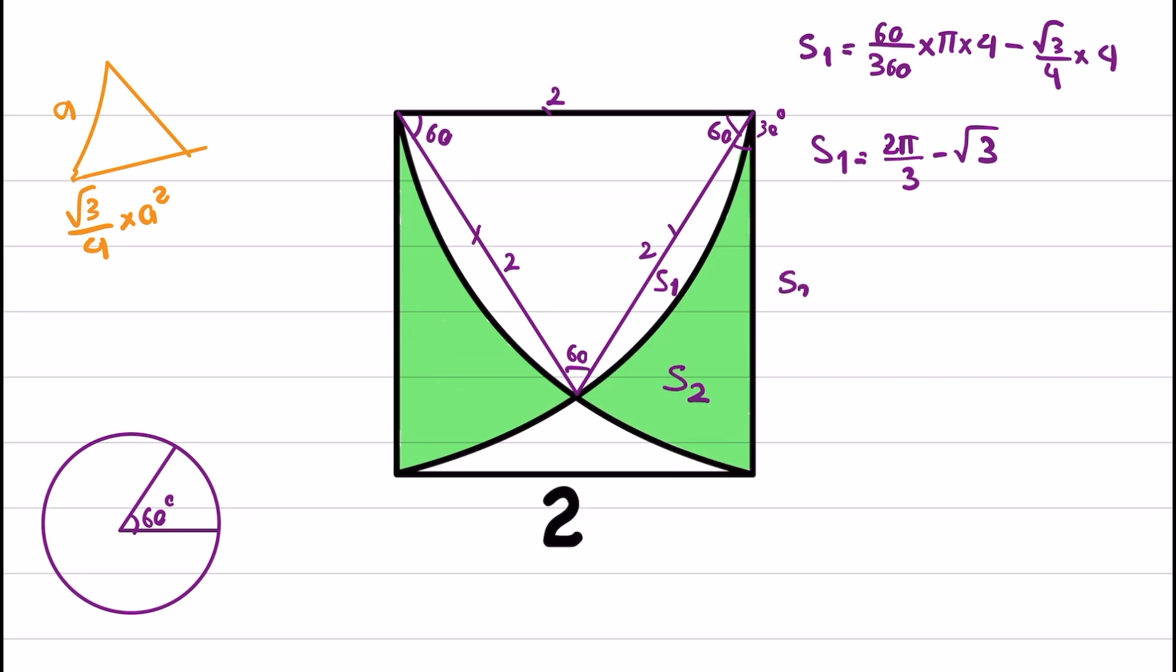S2 equals the area of that sector, which is 30° over 360 times πR² minus S1, which is 2π/3 minus √3. Simplifying this gives π/3 minus 2π/3 plus √3, which equals √3 minus π/3 as the area of S2.